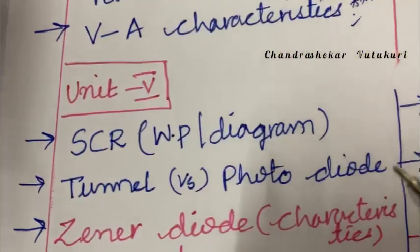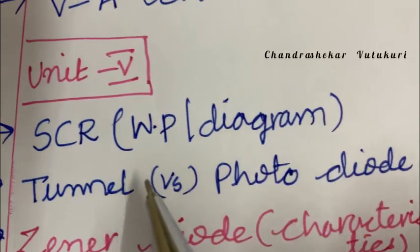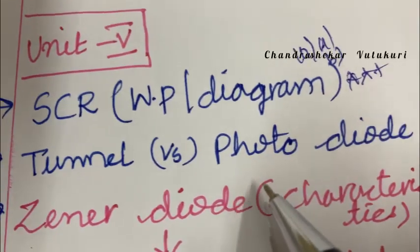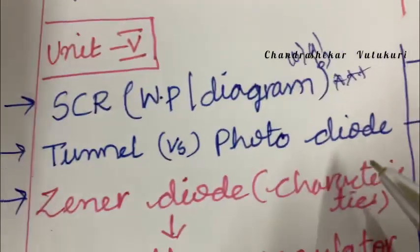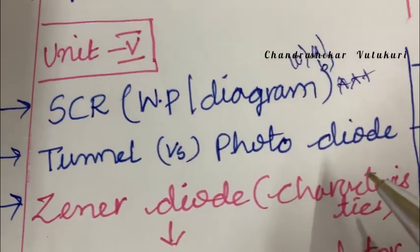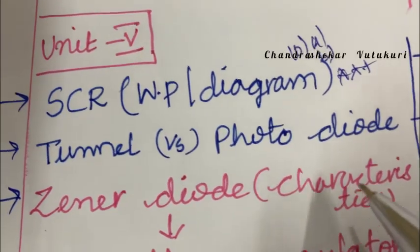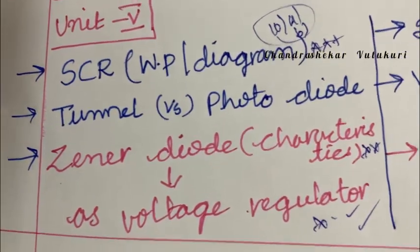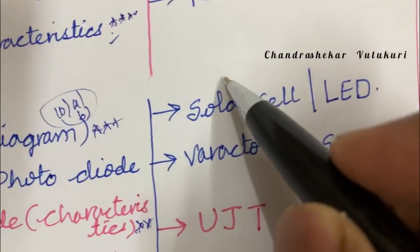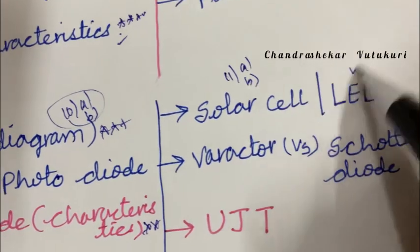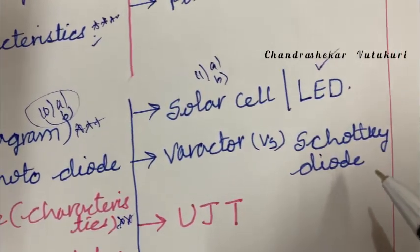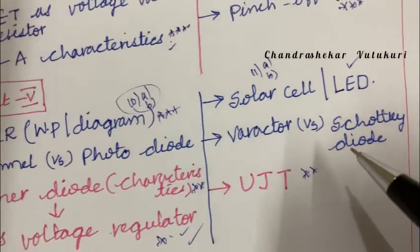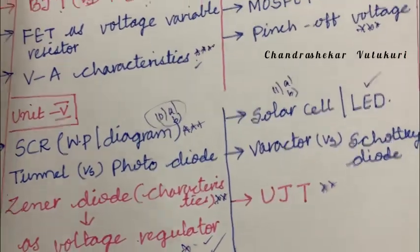For students aiming for good marks and grades, Unit 5 must be covered. SCR working principle and diagram is the topmost question appearing in 10A and 10B. Tunnel diode versus photodiode — they may ask the difference or theory on individual diodes as short questions. Zener diode along with its characteristics as a voltage regulator is the topmost gunshot question in 10A and 10B. Solar cell may be a short or long question in 11A and 11B. LED, Schottky diode, varactor diode, and UJT are all set to be short or long questions.